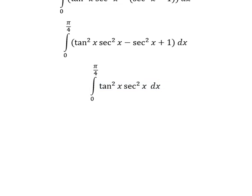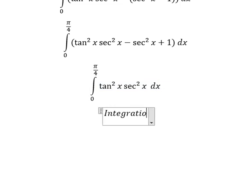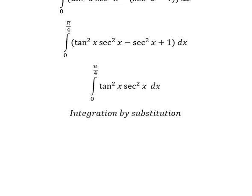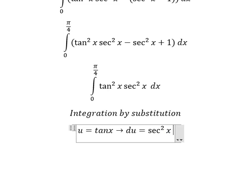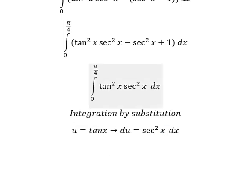Now we can use integration by substitution. I will put u equals to tan x. Next, we need to take the derivative for both sides, and we have du equals to secant squared x dx.